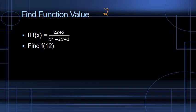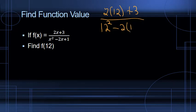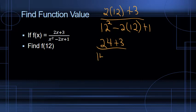So we've got 2 times 12 plus 3 over 12 squared minus 2 times 12 plus 1. 2 times 12 is 24, so now we've got 24 plus 3 over — 12 squared is 144 — minus 2 times 12, which gives us negative 24, plus 1.